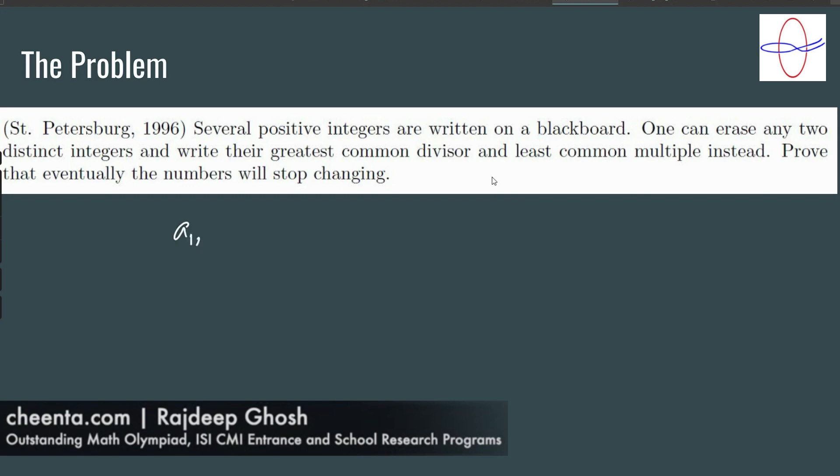So what we have is that we start with some numbers, A1, A2, AN on a blackboard. And what we do is we take some two numbers, say Ai and Aj, and we replace them with their GCD and their LCM. Note that this is a replacement. So we don't actually keep Ai and Aj anymore.